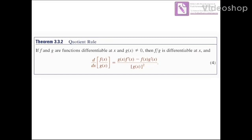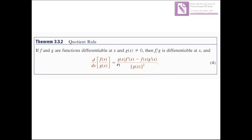Theorem 3.3.2: Quotient Rule. If f and g are differentiable functions at x, and g(x) is not equal to 0, then f over g is differentiable at x, and the derivative of f(x) over g(x) is given by g(x) multiplied by f prime(x) minus f(x) multiplied by g prime(x), all divided by g(x) squared.